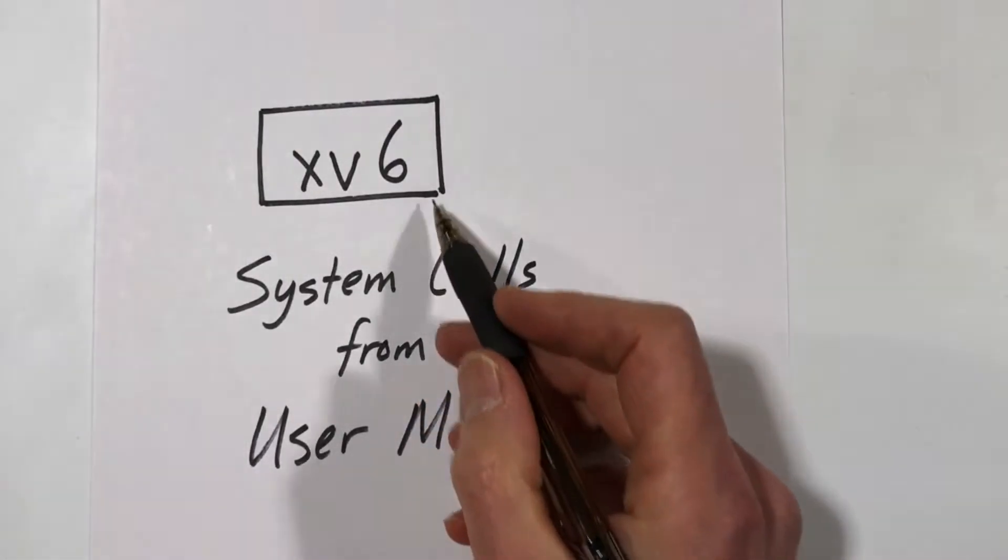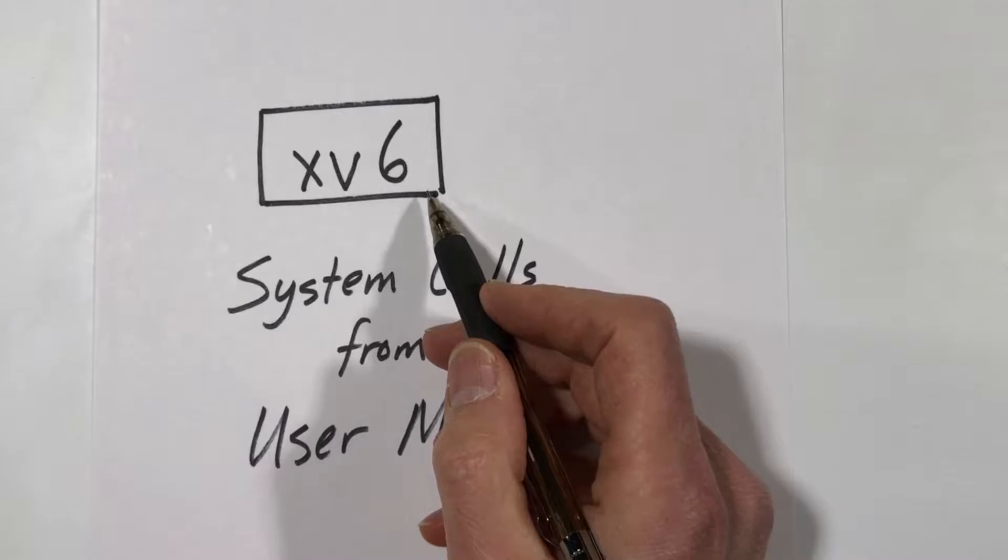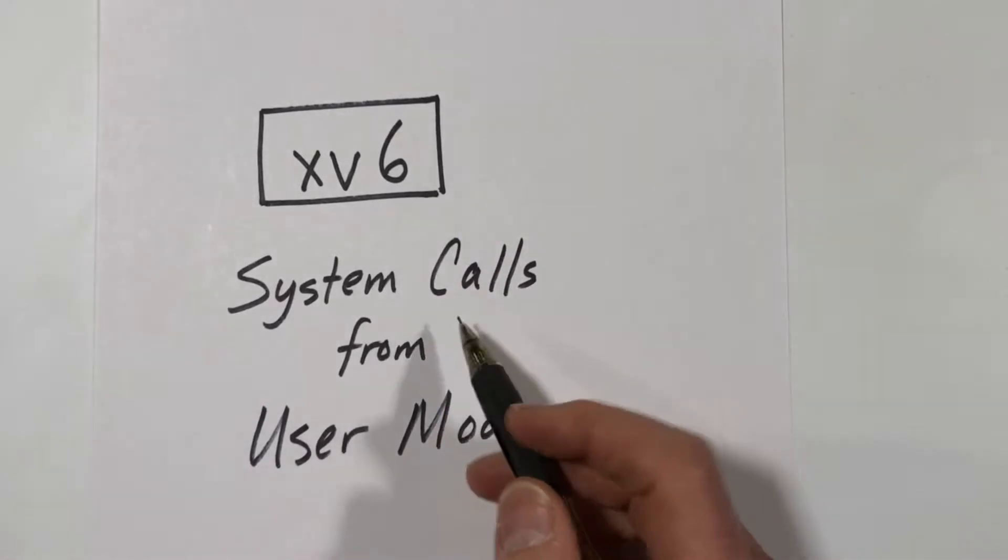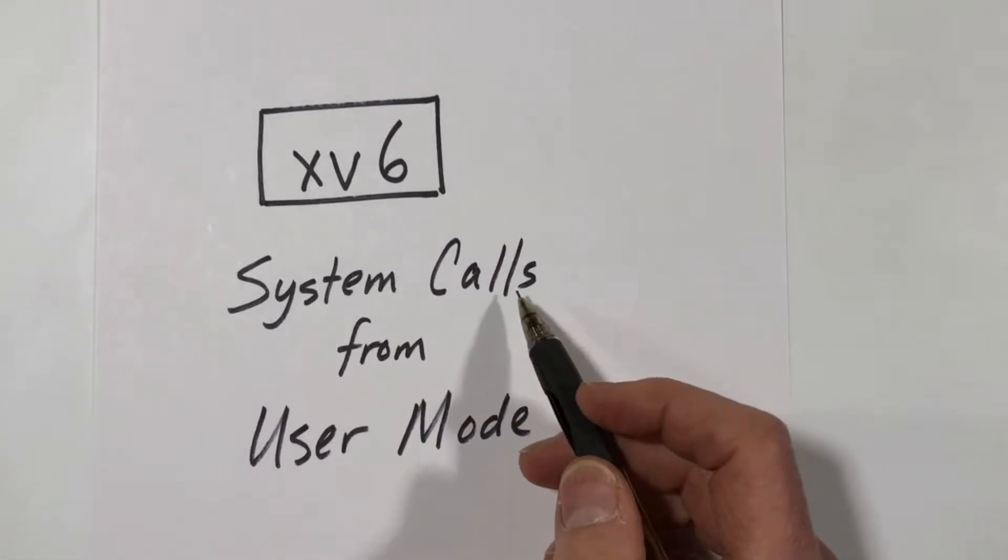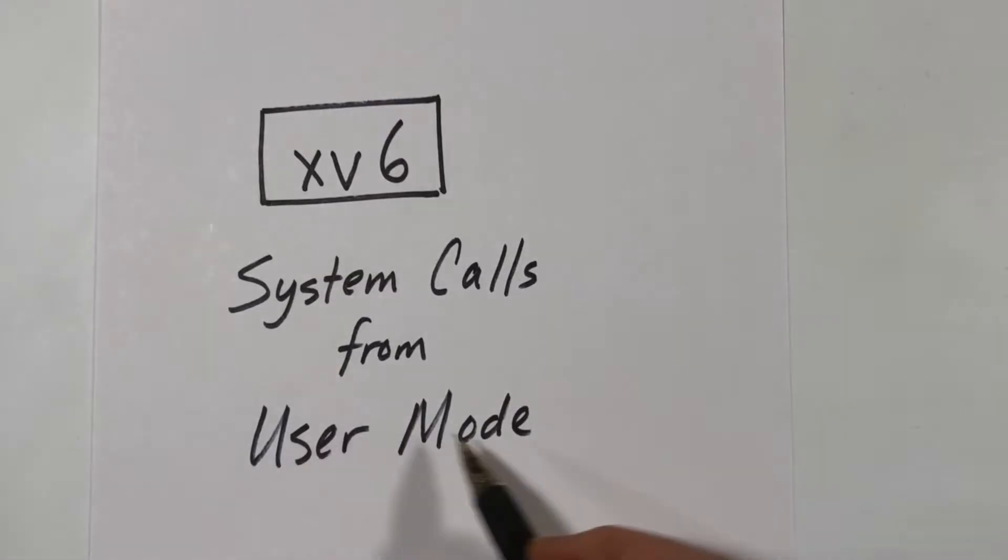This video is part of a series on the XV6 operating system kernel. In this video, I'm going to talk about system calls and how they can be made from user mode code.